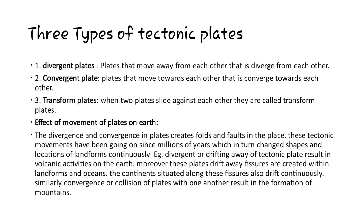The divergence and convergence of plates create folds and faults in the plates. These tectonic movements have been going on for millions of years, continuously changing the shapes and locations of landforms. For example, divergence or drifting away of tectonic plates results in volcanic activities on earth. Wherever plates drift apart, fissures are created within landforms and oceans, and the continents along these fissures also drift continuously. Similarly, convergence or collision of plates results in the formation of mountains — this is how Mount Everest and similar mountains were formed.